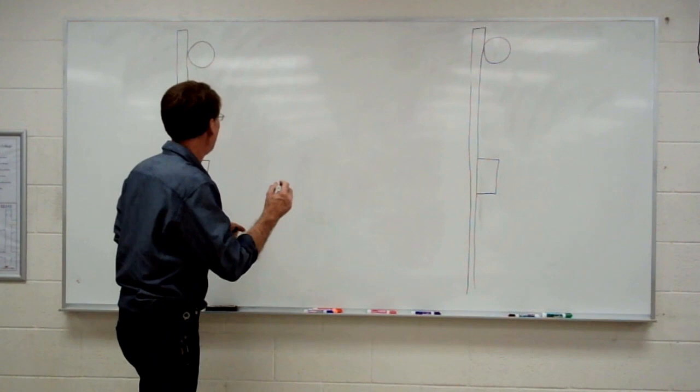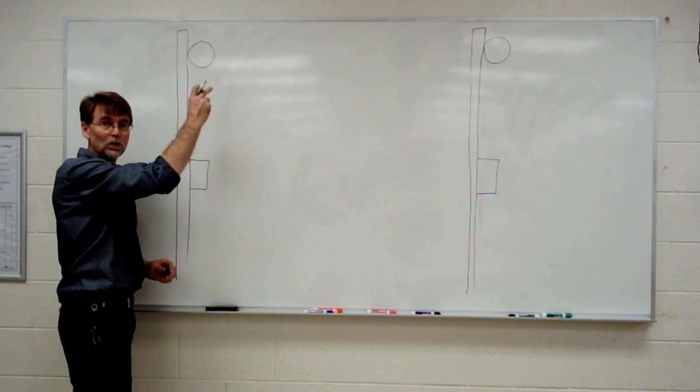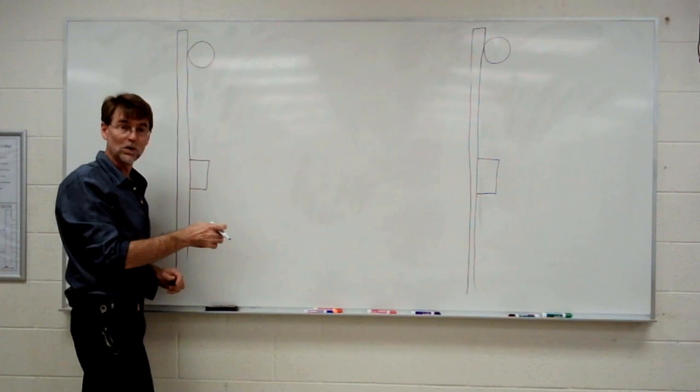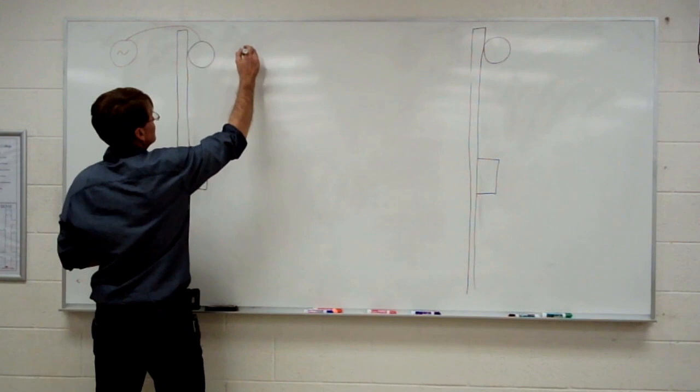So we're going to go back and look at the scenario where the power comes not into the switch, but into the light first. When the power comes into the switch, it's pretty straightforward. We just wire the lights together to get the neutral through and we control the hot. The two black wires go on the switch. But when the power comes into the light fixture first, how do we get the switch to control the light?